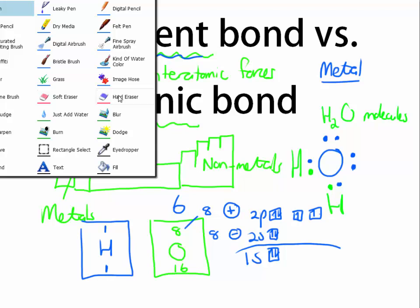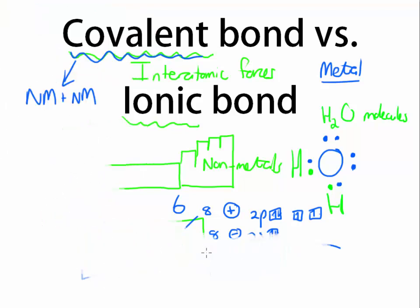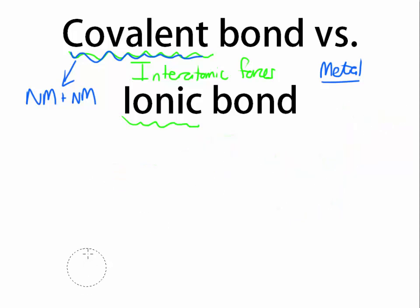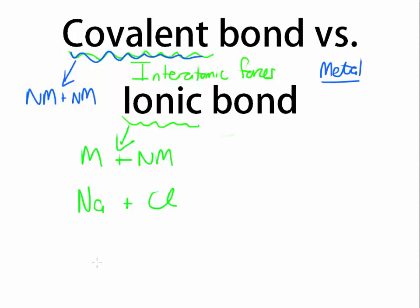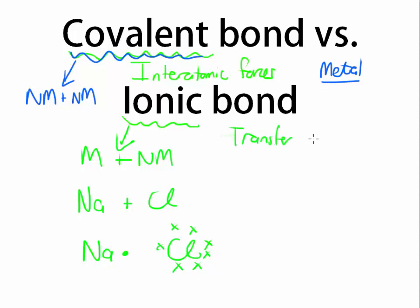If we move on and look at ionic bonds, we are now focusing on bonds between metals and non-metals. When we talk about ionic bonds, it will be between metals and non-metals. The example I'll use is Na bonding to Cl. Na is in group 1, so in its outermost orbital it has one electron. Chlorine is in group 7, which means chlorine has 7 electrons in its outermost orbital. What happens here is not the sharing of electrons like we saw with a covalent bond — what happens here is a transfer of electrons.